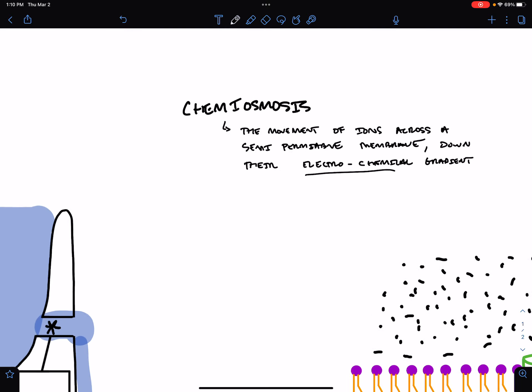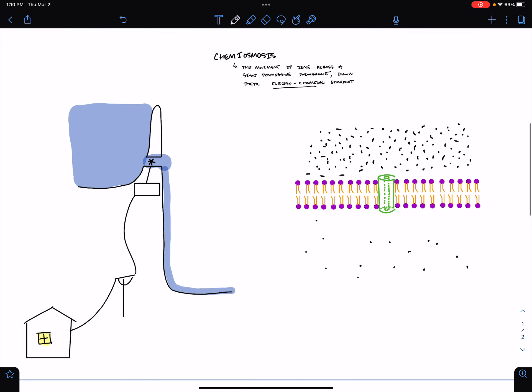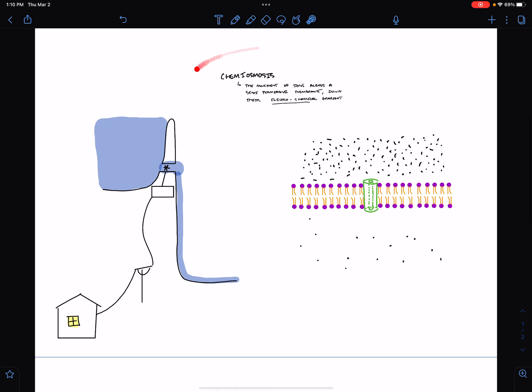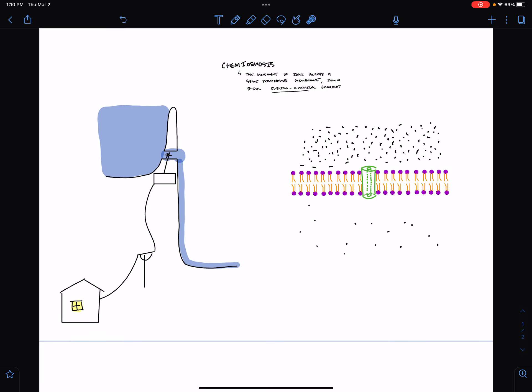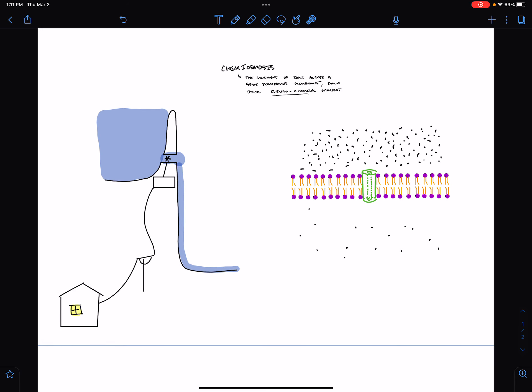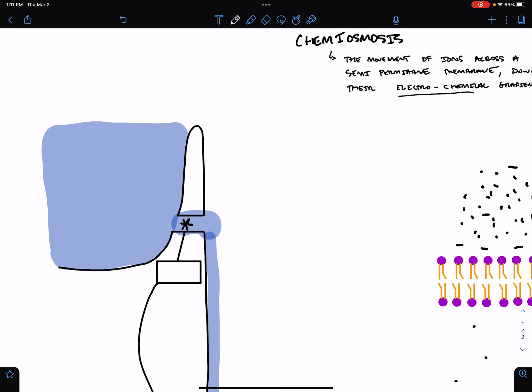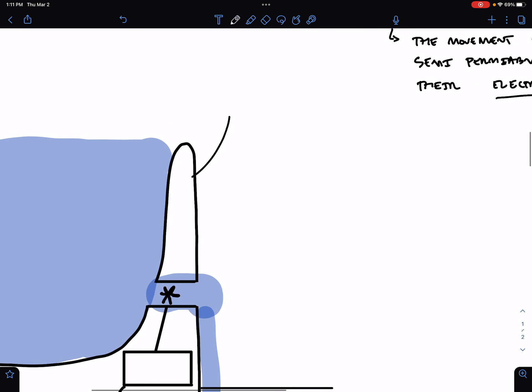This creates an electrochemical gradient. Before we talk about chemiosmosis, I'm going to make an analogy with a hydroelectric dam. Here's how a hydroelectric dam works. You have a river that flows from the mountains down to the ocean. But if you put up a dam in the way, you trap a huge amount of water up high. This is a hydroelectric dam.